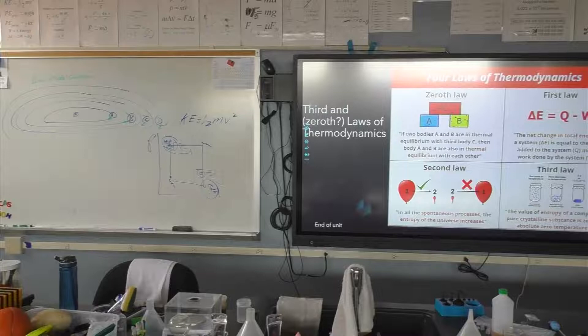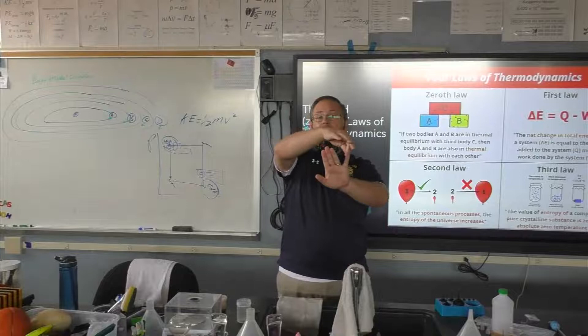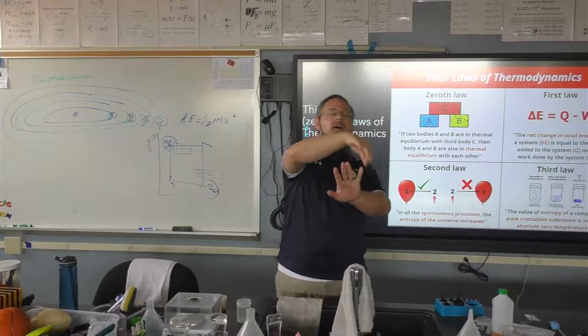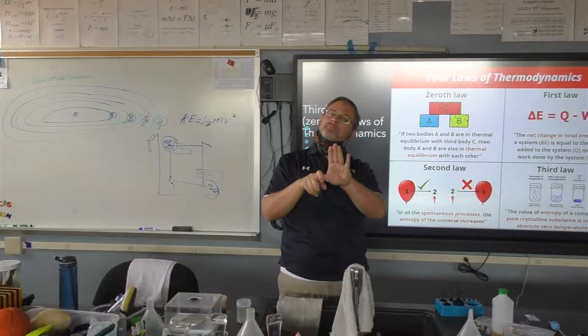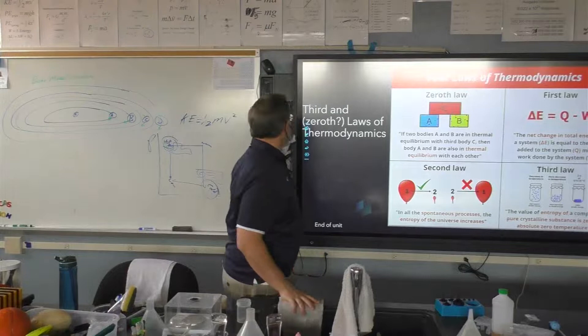Six pico-kelvins is the point at which matter starts acting like a different form of matter — it becomes a Bose-Einstein condensate. There are five forms of matter: solid, liquid, gas, plasma (when gas gets hot enough for electrons to jump from molecule to molecule), and on the other end, when molecules get so cold their motion allows electrons to travel from atom to atom — that's a Bose-Einstein condensate.